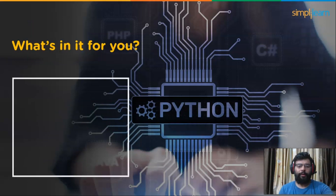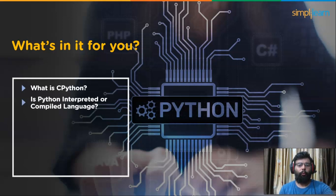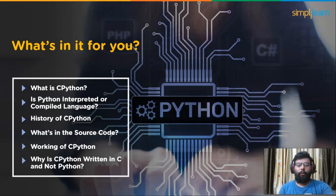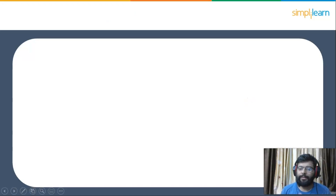In this session, you will learn about what CPython is, whether Python is an interpreted or compiled language, the history of CPython, and the basics of CPython source code. You will also understand the working of CPython and learn why CPython is written in C and not Python.